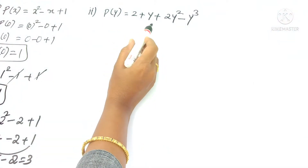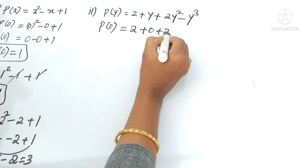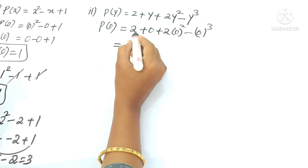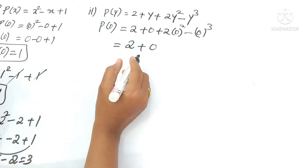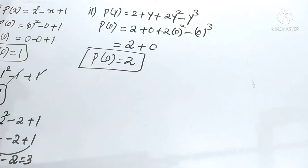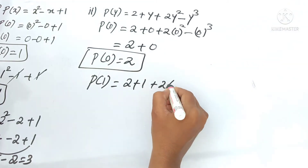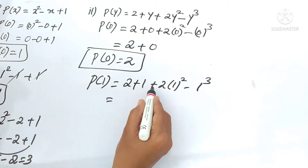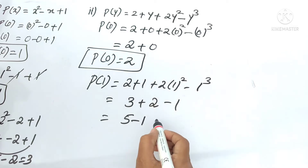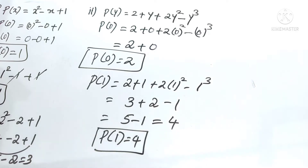The second problem: p of y equals 2 plus y plus 2y square minus y cube. For p of 0, write 0: 2 plus 0 plus 2 into 0 square minus 0 cube. All these values are 0, so 2 plus 0 means 2 only. So p of 0 equals 2. Next, p of 1 - write 1 in the place of y. 2 plus 1 is 3, plus 2 into 1 square is 2, minus 1 cube is 1. So 3 plus 2 is 5, minus 1 is 4. So p of 1 equals 4.